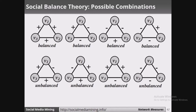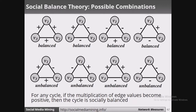As you can see, in the top row all the graphs have an even number of negative edges, or there are no negative edges at all, so they are all balanced graphs. In the second row, the number of negative edges is odd, so they are all unbalanced graphs. If the multiplication of edge values is positive, the cycle is socially balanced. In the top row: (+)(+)(+) = +, and (+)(−)(−) = + because minus times minus is plus. In the second row: (+)(+)(−) = − and (−)(+)(+) = −, so all graphs in the second row yield a negative result, making them unbalanced or inconsistent.